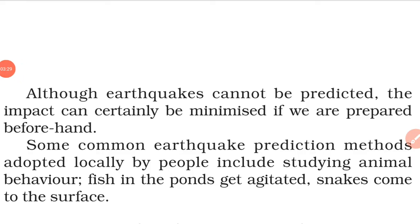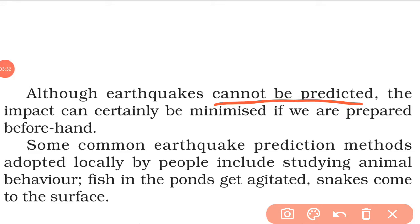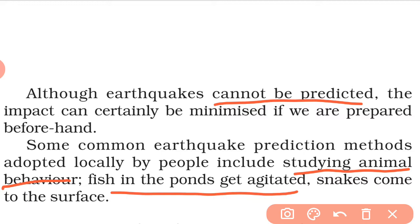Although earthquakes cannot be accurately predicted, some predictions can be made based on the local environment and observations. This includes studying animal behavior — fish in ponds get agitated, snakes come to the surface. These are simple observations, though they are only assumptions.